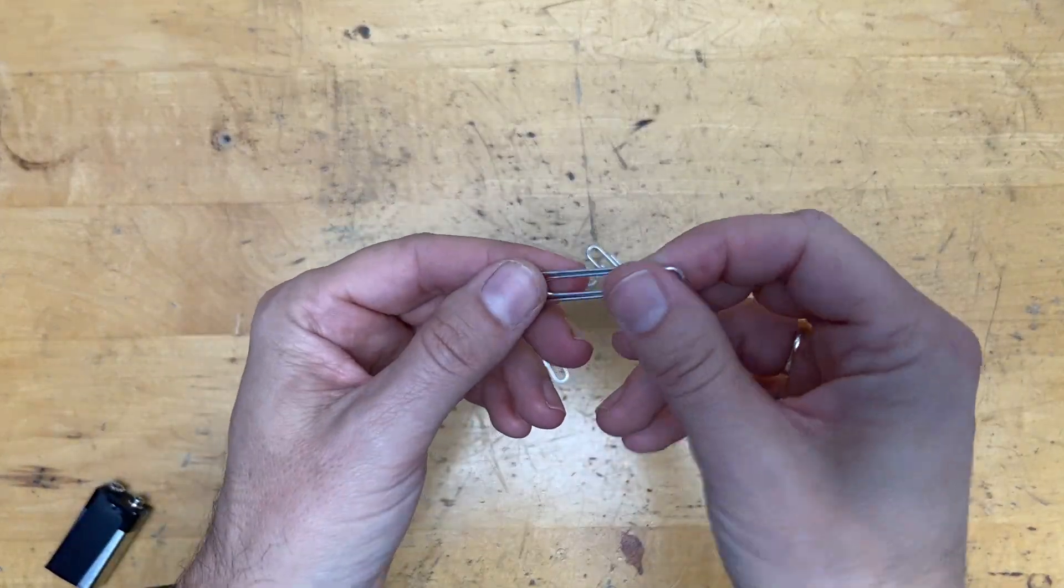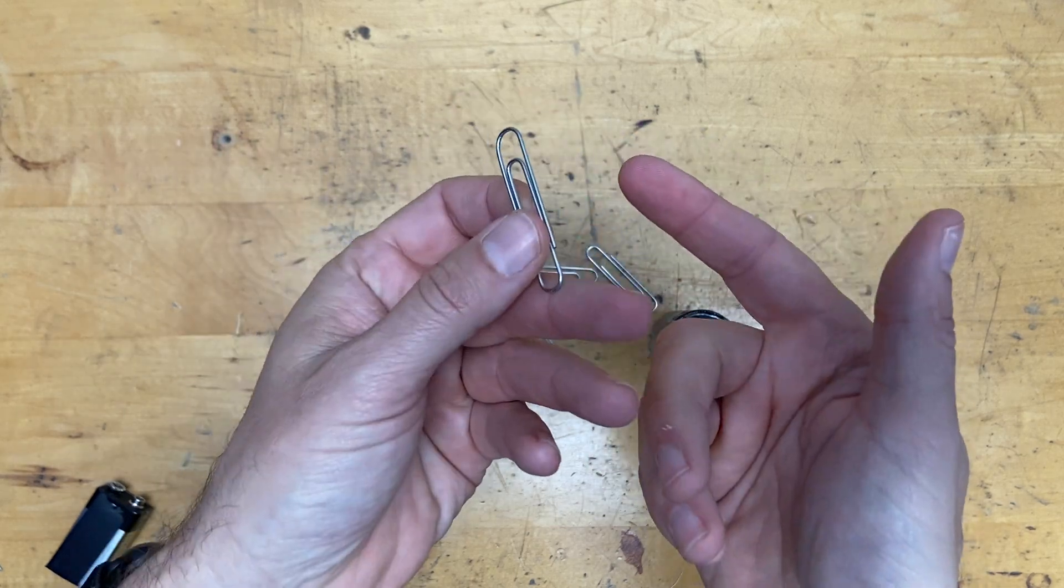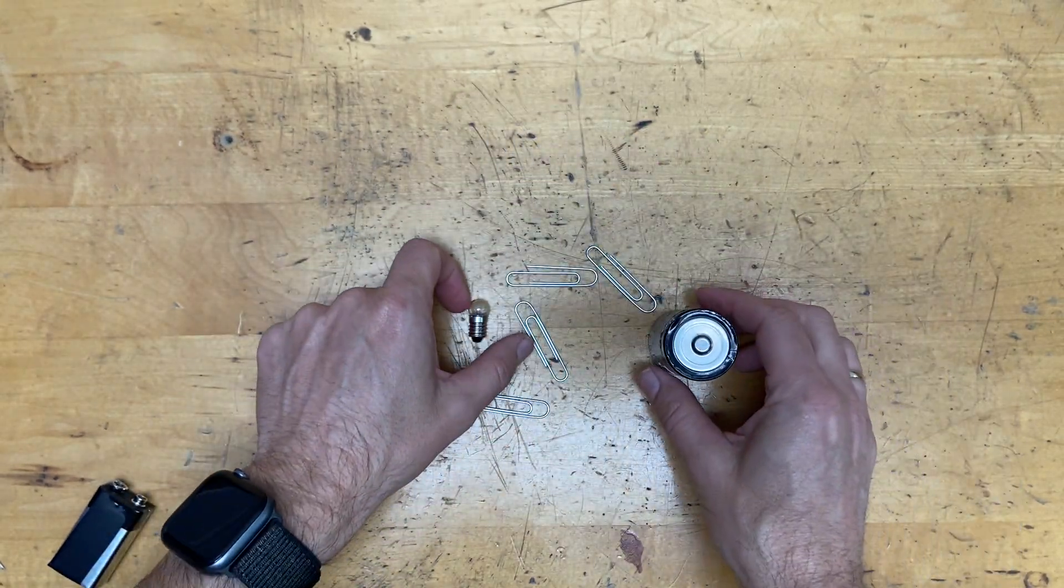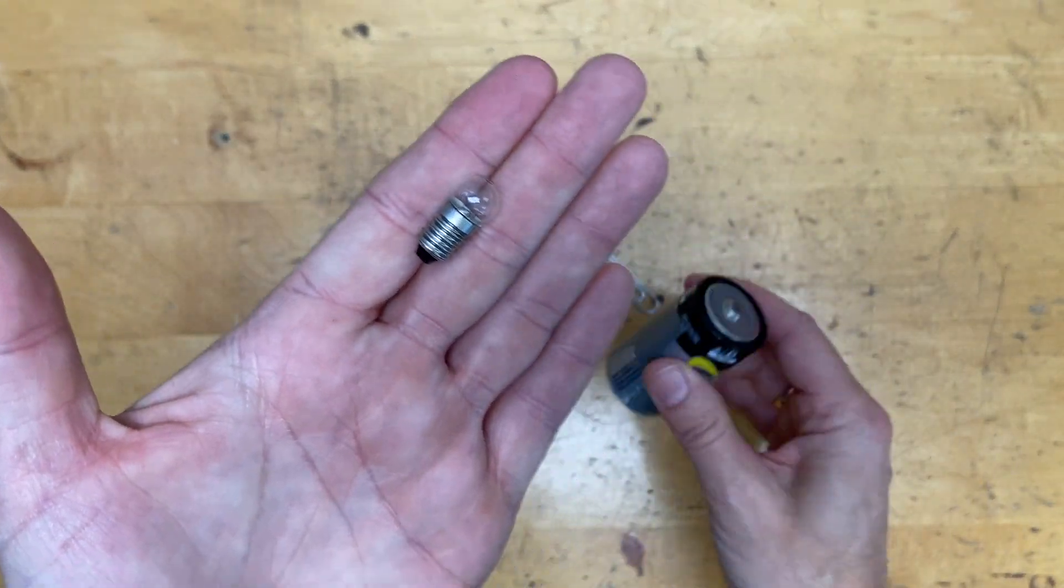So I am continuing to make things with paper clips or do things with paper clips. This is the paper clip and what I want to do is to use paper clips to make this bulb light up with this battery.